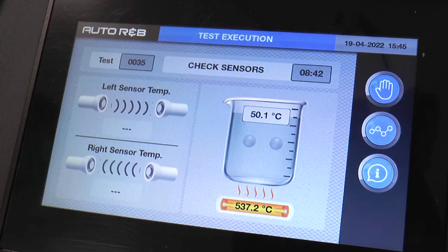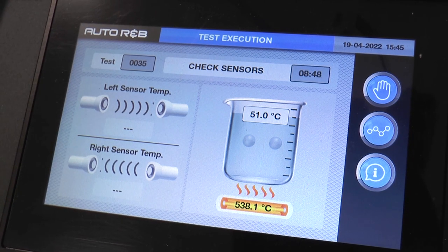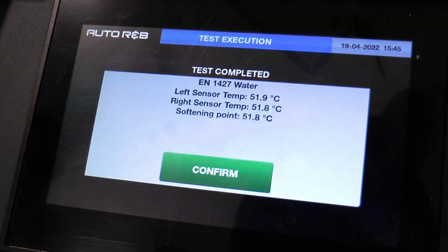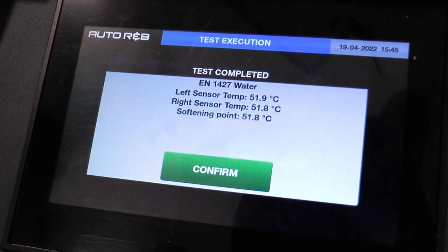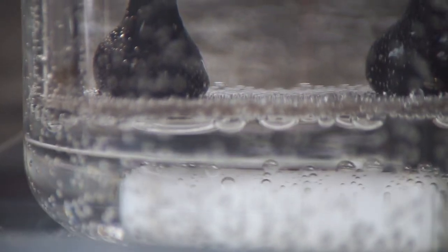The display shows the softening point temperatures of the two specimens. The test can be saved into the machine memory. At the end of the test, the stirrer is stopped and the fan is activated to start cooling off the test area.